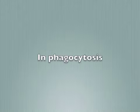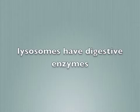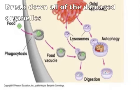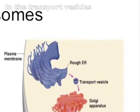Endocytosis: lysosomes have digestive enzymes inside them. Autophagy lysosomes break down damaged organelles. This occurs within the transport vesicles.